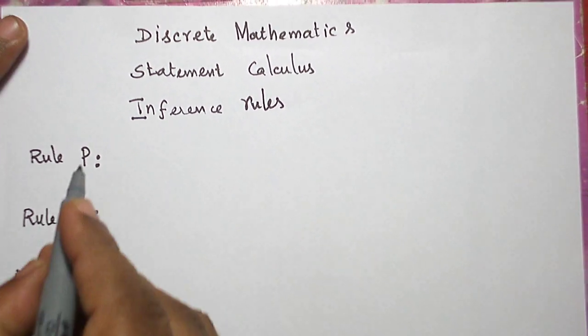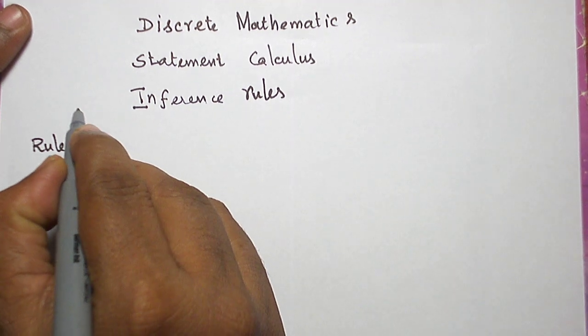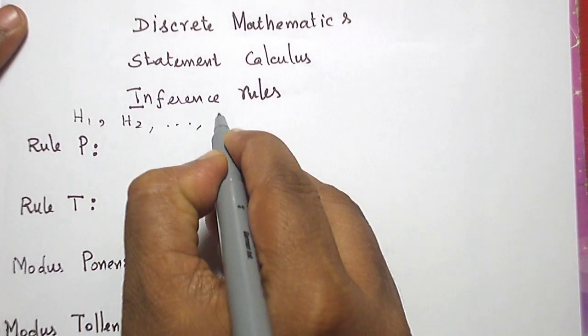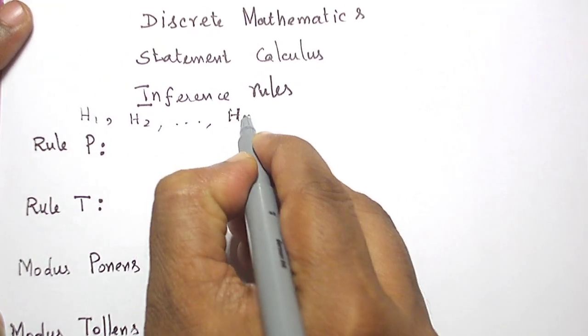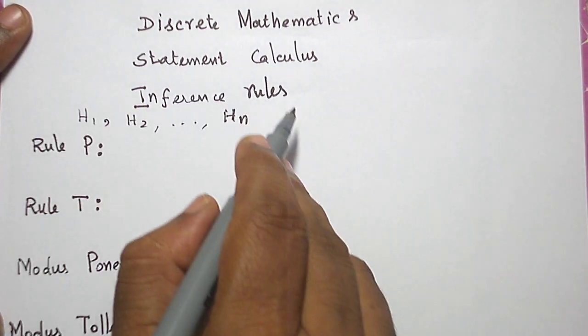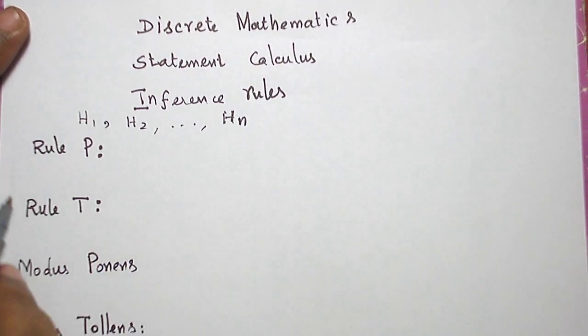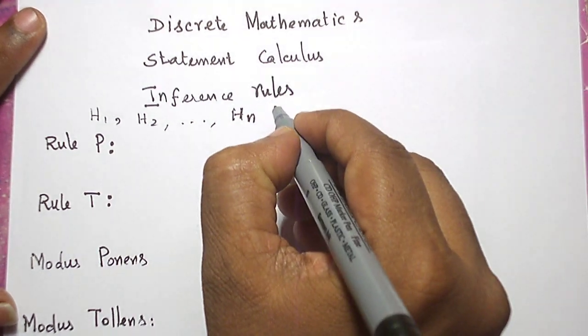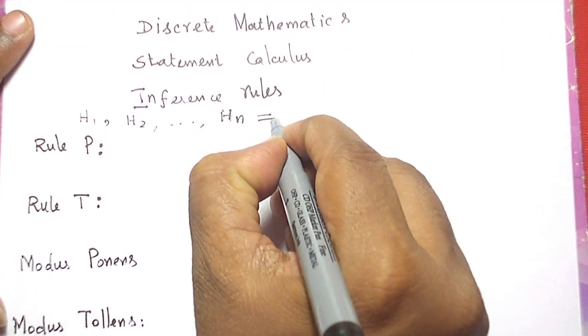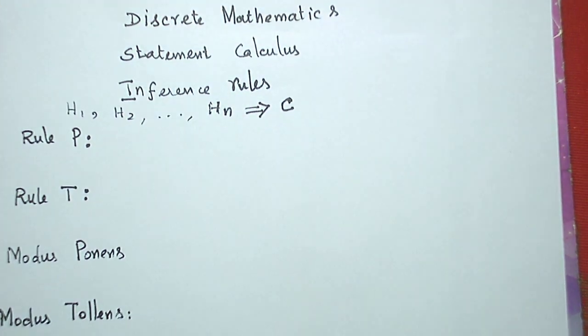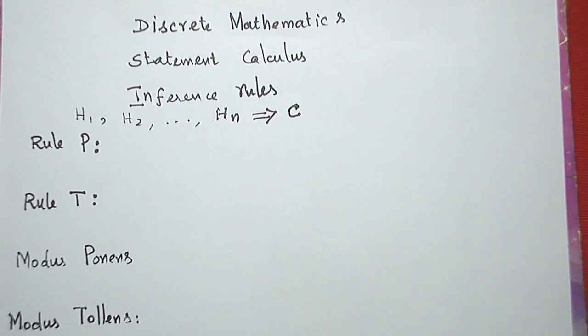In this topic we will be given some statement formulas H1, H2, and so on up to Hn. These statement formulas are called premises. Using these premises, applying them on certain equivalences and certain inference rules, we should logically conclude a statement formula called C. So this is what we are going to do.